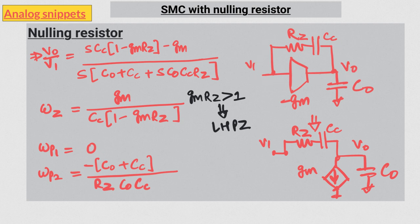And if we make sure that this RZ is greater than 1 over gm, then the overall path never reverses the polarity. As a result, we don't get the right-hand zero.